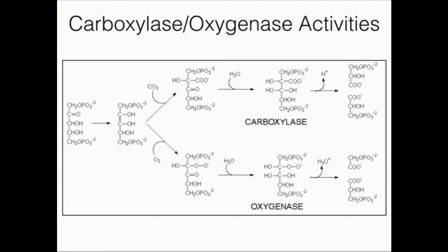However, once we initially form this enediol intermediate in the mechanism, we can actually oxygenate this intermediate, and through a series of steps we're actually going to get one molecule of 3-phosphoglycerate and another molecule called 2-phosphoglycolate. 2-phosphoglycolate is not bad in the sense that it's a poison — it's actually useless. The plant is going to have to do a variety of metabolic transformations to get it back into something useful, and those metabolic transformations are energetically costly. This oxygenase activity gives the O in rubisco — oxygenase — because rubisco stands for ribulose 1,5-bisphosphate carboxylase oxygenase.